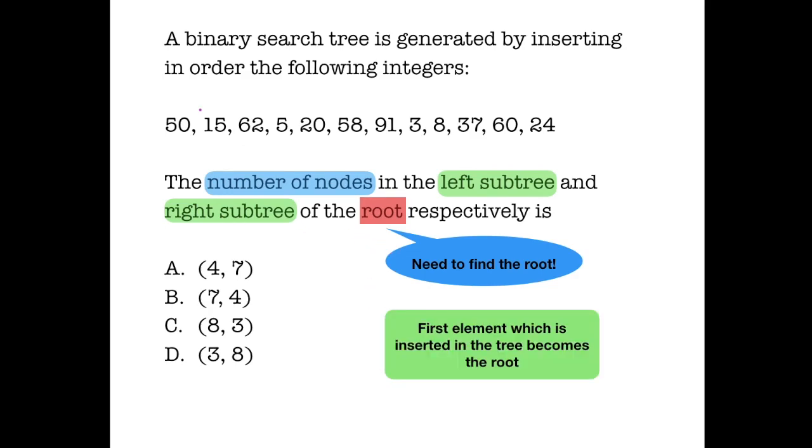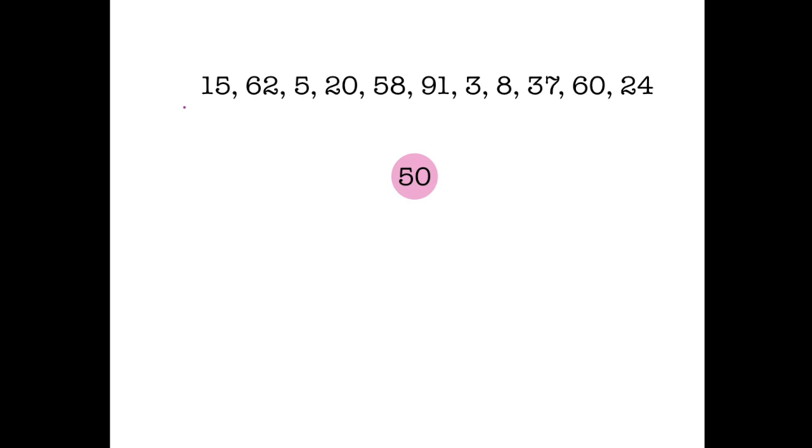The first element which is inserted in the tree becomes the root. So we know that the first element which is inserted is 50, so 50 will be the root of the tree.